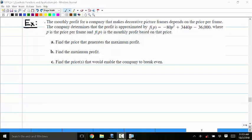Okay, next example. The monthly profit for a company that makes decorative picture frames depends on the price per frame. The company determines that the profit is approximated by F of P equals, where little p is the price per frame and F of P is the monthly profit based on that price.